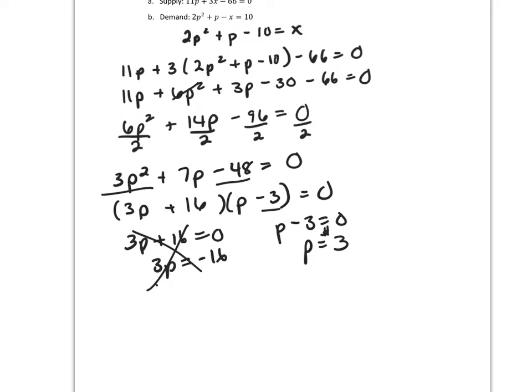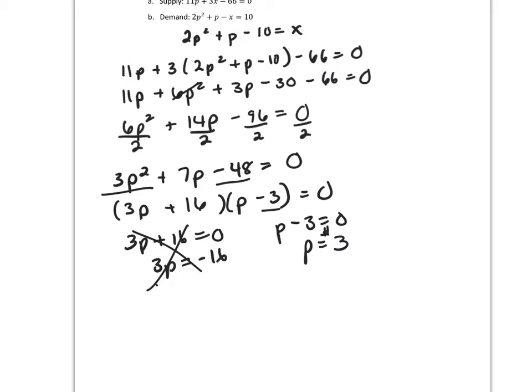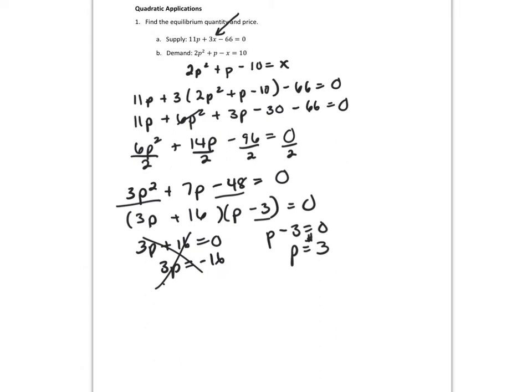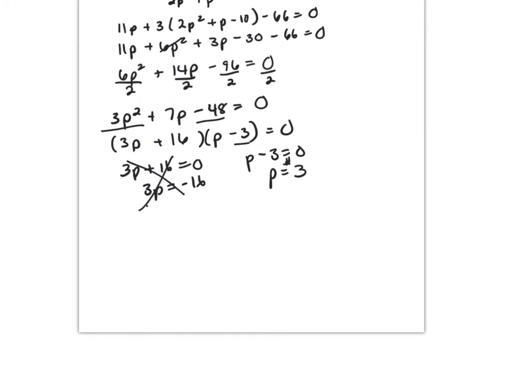Now we need to substitute that P back in somewhere and solve for X. Doesn't matter which equation you use. I'm going to choose the top one, which is 11P plus 3X minus 66 equals 0. And that's 11 times P, which is 3, plus 3X.